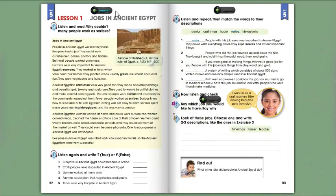Unit 5, Lesson 1, Page 92, Exercise 1. Listen and read: Why couldn't many people work as scribes?